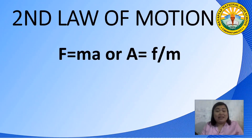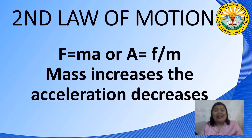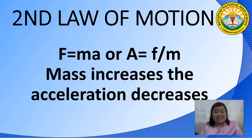Recalling the second law of motion, force equals mass multiplied by acceleration, or acceleration equals force over mass. This clearly states that as the mass increases, the acceleration decreases. So the answer to the question is that the gun has more mass than the bullet; hence, the gun accelerates less than the bullet.